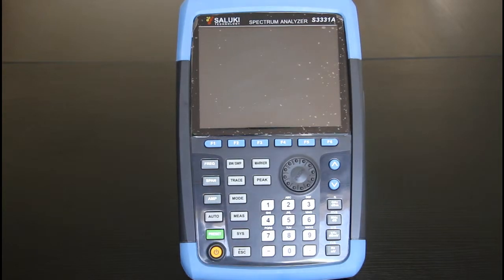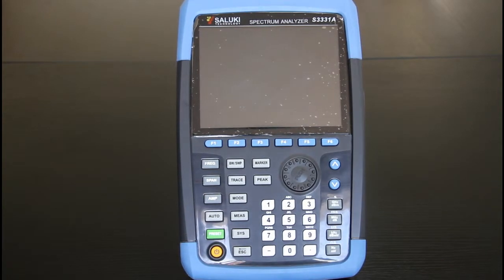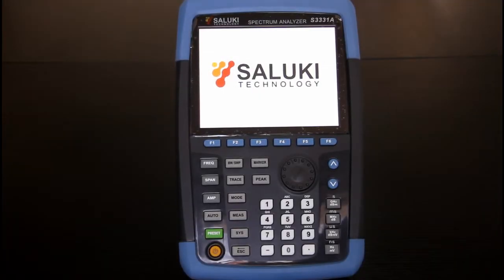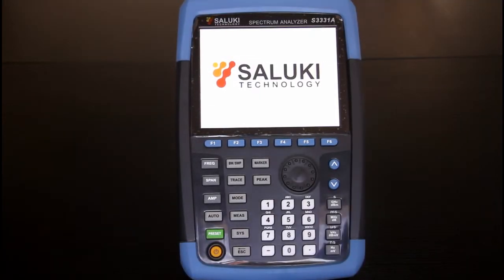This is a spectrum analyzer which is 3.6 GHz and we also have S3331B which is 7.5 GHz. So let's have a look at it. Hold the start button and the instrument will turn on.